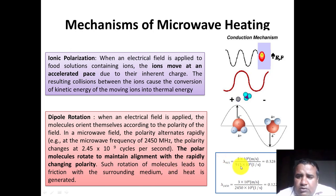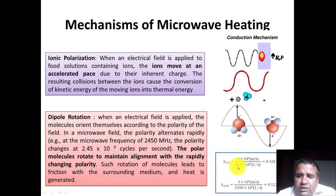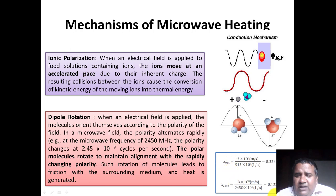To find out the wavelength, we use the formula λ = c / f, where λ is the wavelength, c is the speed of light (3 × 10⁸ m/s), and f is the frequency. For the frequency of 915 MHz, the wavelength comes out to approximately 0.328 meters. For the higher frequency of 2450 MHz, the wavelength is approximately 0.122 meters.